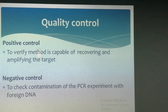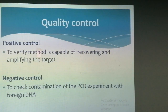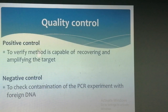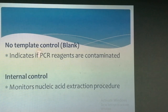Another very important aspect to be considered during lab setup is quality control. In a PCR lab, quality control is mainly concerned with control of errors in the performance of tests and verification of test results. For this, internal and external quality control should be kept in consideration. The following controls can be used for assurance of results: positive control — to verify that the method is capable of recovering and amplifying the target; negative control — to check contamination of PCR experiment with foreign DNA; blank or no-template control — to indicate if PCR reagents are contaminated; and internal control, which monitors the nucleic acid extraction procedure.